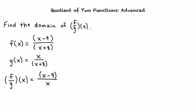Recall that f of x equals x minus 9 divided by x plus 8, g of x equals x divided by x plus 8, and f divided by g of x equals x minus 9 divided by x. The domain of f divided by g can contain only values that are in the domains of both f of x and g of x. So in order to find the points that are not in the domain, we need to find all the x values that make the function undefined. A function is undefined any time we cannot calculate the output, such as when the denominator is equal to 0.